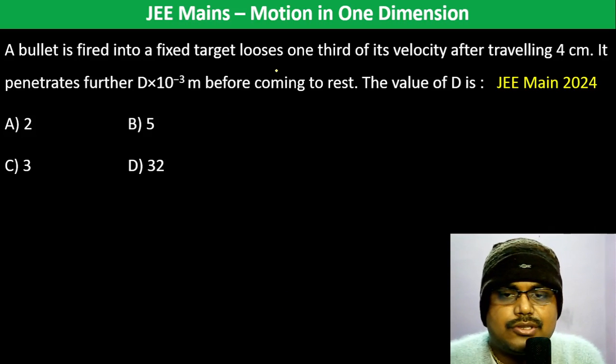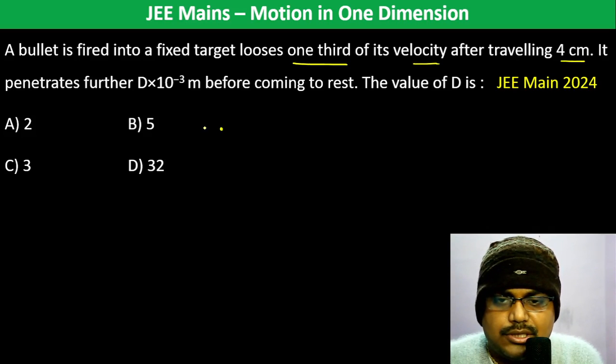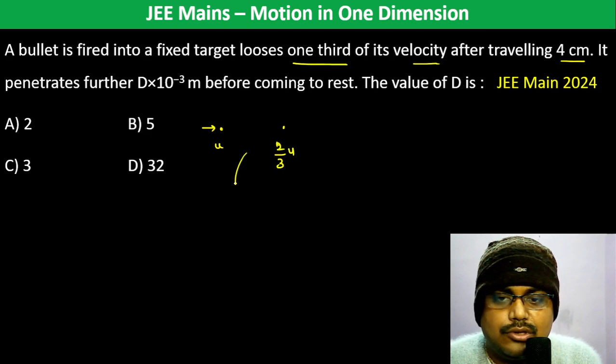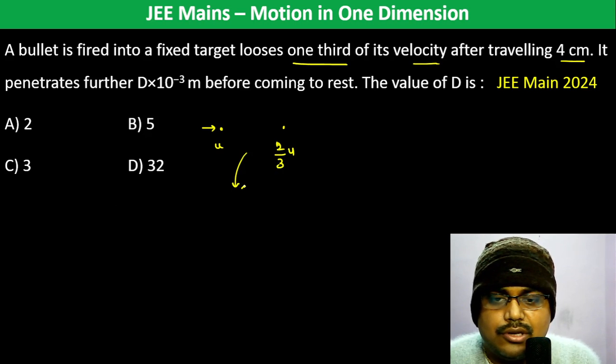A bullet is fired into a fixed target and loses one third of its velocity after traveling 4 centimeters. So here it is u, and here it becomes 2/3 u. Now this is s1, which is 4 centimeters.